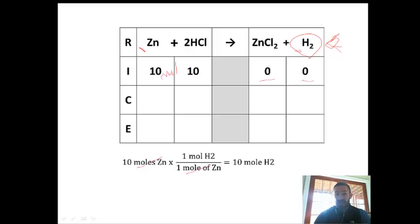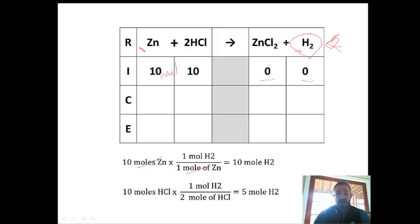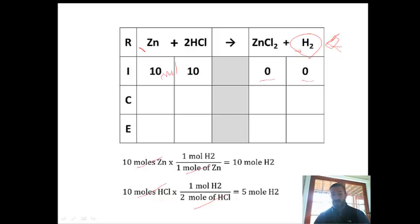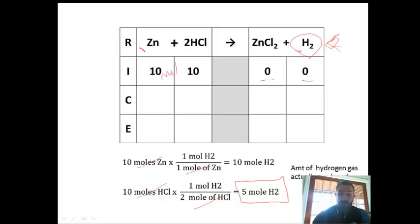We do the same with hydrochloric acid. The ratio of hydrochloric acid to hydrogen is 2 to 1, so 10 moles of hydrochloric acid times one-half gives us 5 moles of hydrogen gas. From the sandwich example, we know we take the smaller value — we actually get 5 moles of hydrogen gas. That is the amount actually produced.